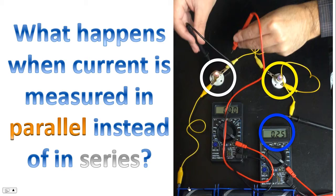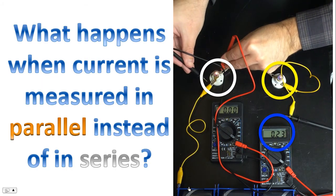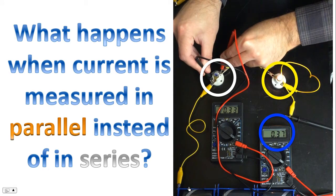So the question is this. What happens when current is measured in parallel instead of in series? This is a mistake that people sometimes make. Let's see what happens. Please focus your attention on the three circles that I have outlined in the video. Hmm. Interesting. Very interesting results.